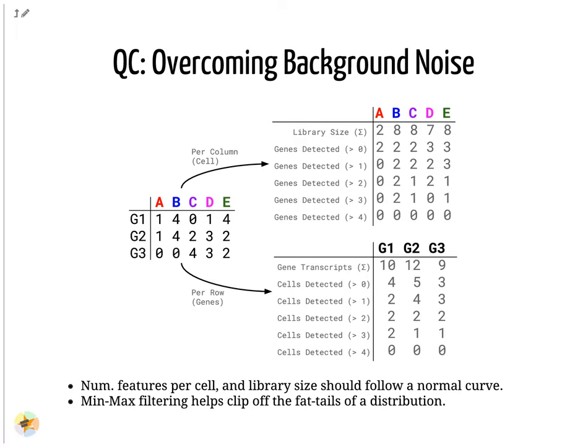We see that even a threshold of greater than three transcripts detected in a given cell still keeps three cells in the analysis: B, C, and E. In the lower table, the opposite is represented, with the total number of transcripts across all cells for each gene. By setting thresholds of detectability, we can see how many cells are described by the gene for that threshold. In both cases, we can see that if we set the thresholds too low, then we risk keeping low-quality genes or cells, but if we set the thresholds of detectability too high, then we risk losing too many.